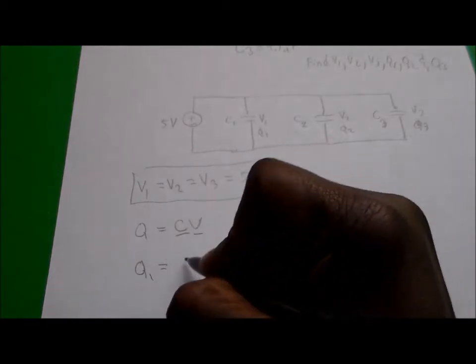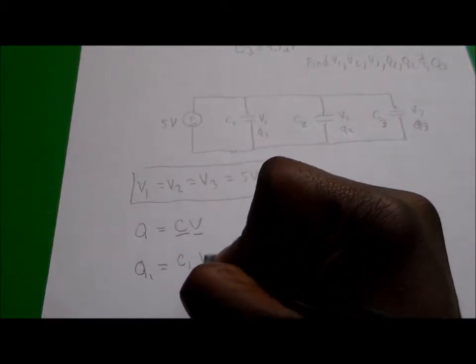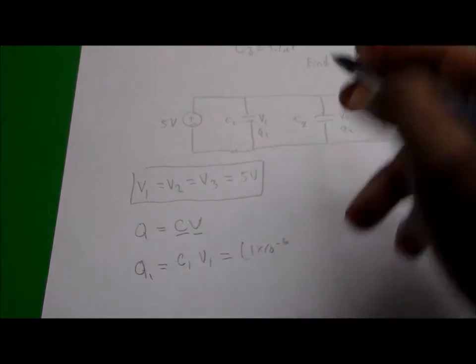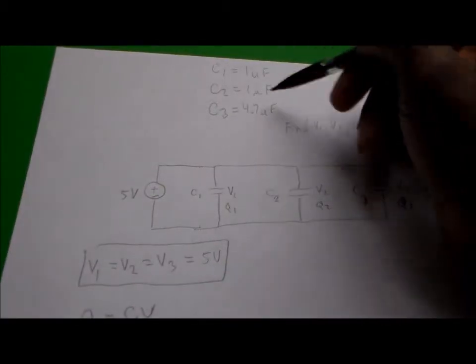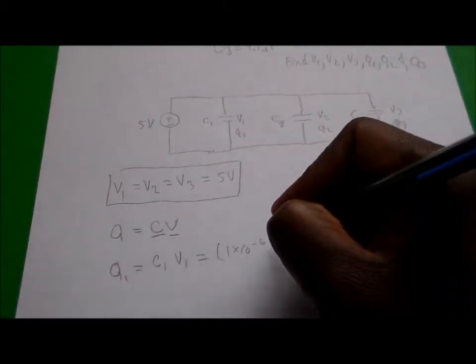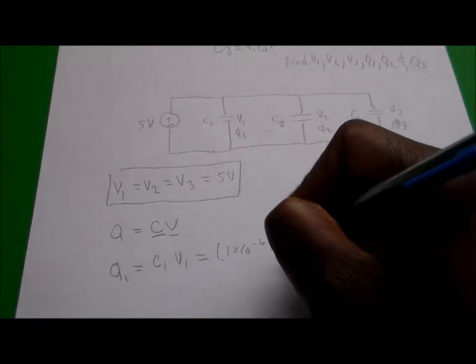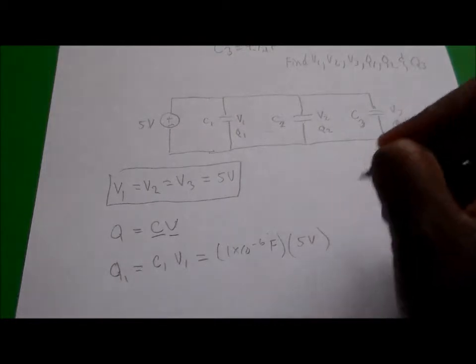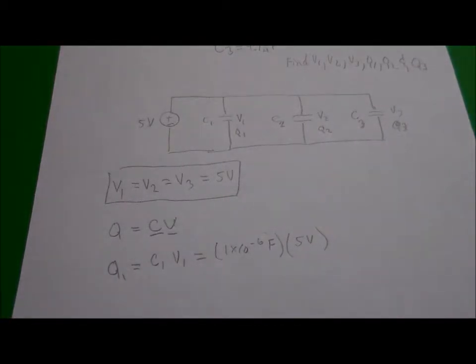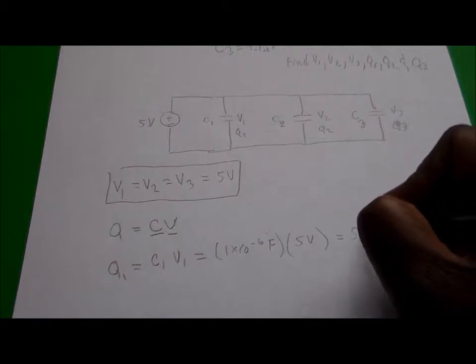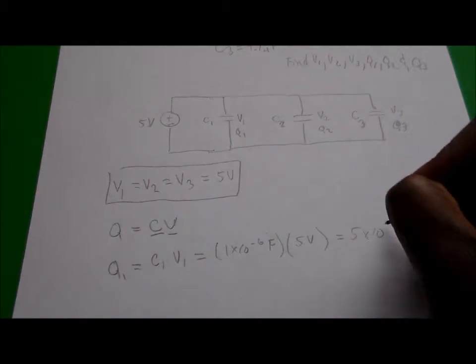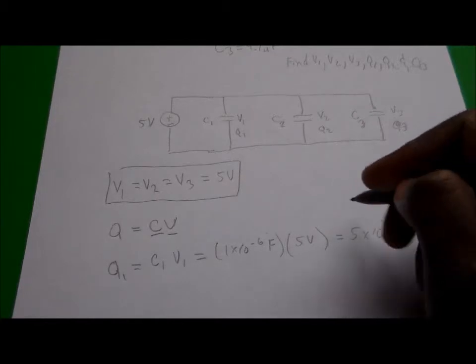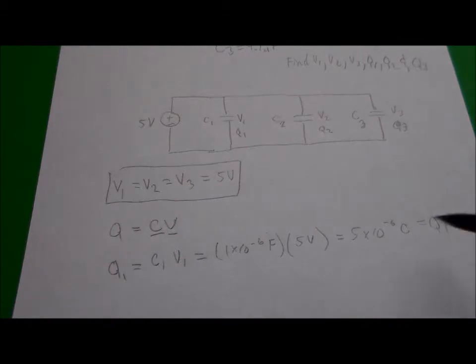So Q1 is equal to C1 times V1, and that is equal to 1 times 10 to the minus 6 farads, because that's what the microfarads are, times the voltage across that, which is 5 volts. And if we multiply those together, we end up with 5 times 10 to the minus 6 coulombs for our charge for Q1.